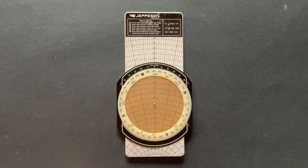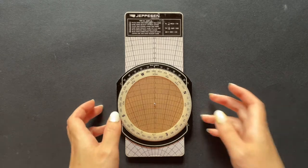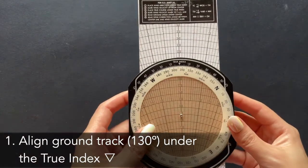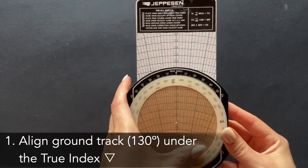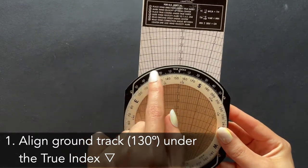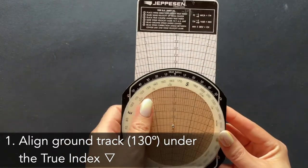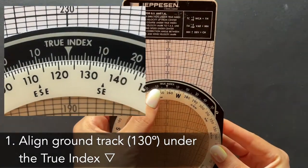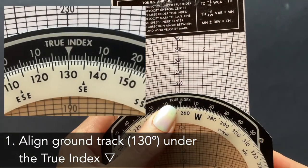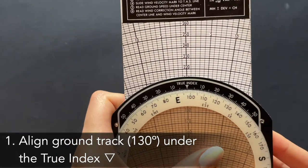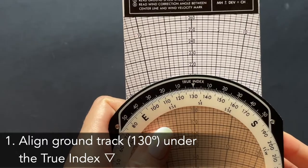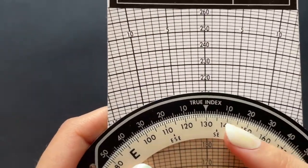Now, regardless of which brand E6B you have, we will need to set our given ground track under the true index. This is what it will look like. You'll notice up here on the outer black band that doesn't rotate, we have the true index. That is where we will want to line up our ground track by rotating this dial. We were provided a ground track of 130 degrees, so that's all there is to it.